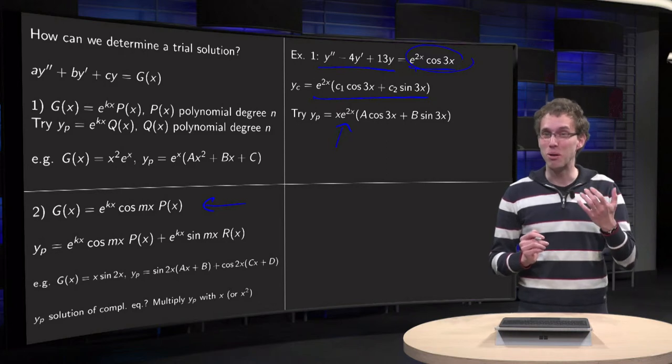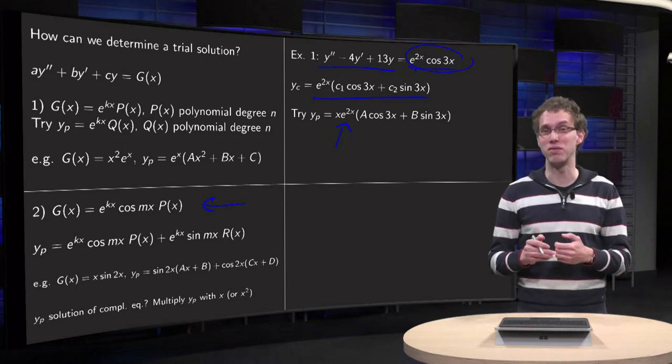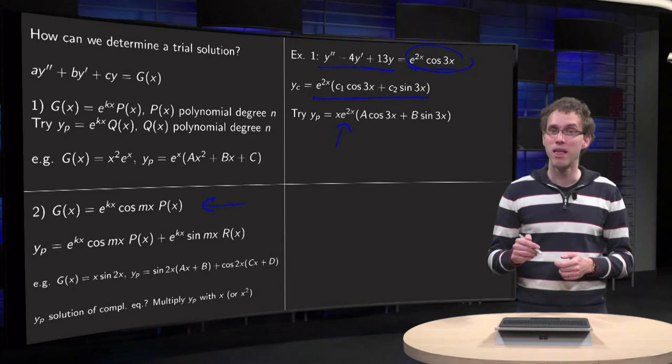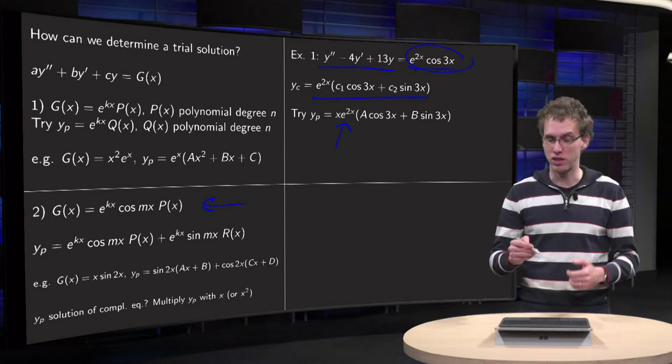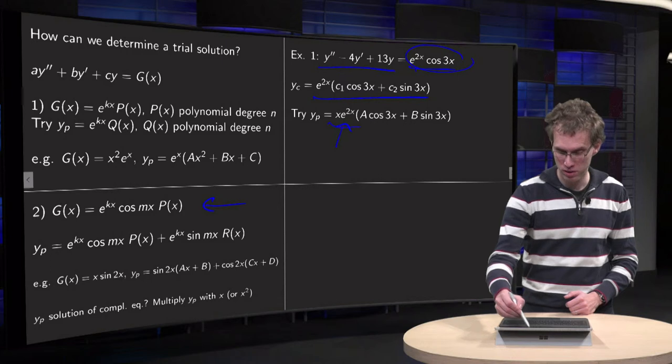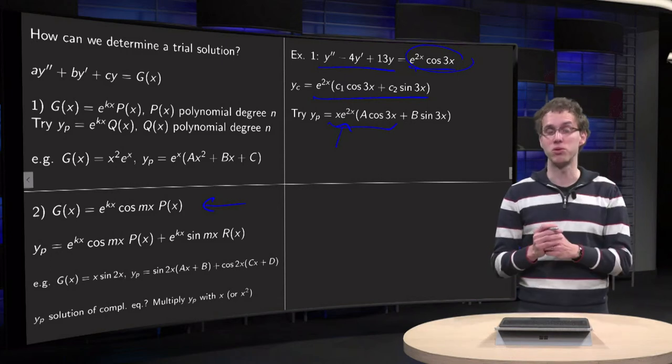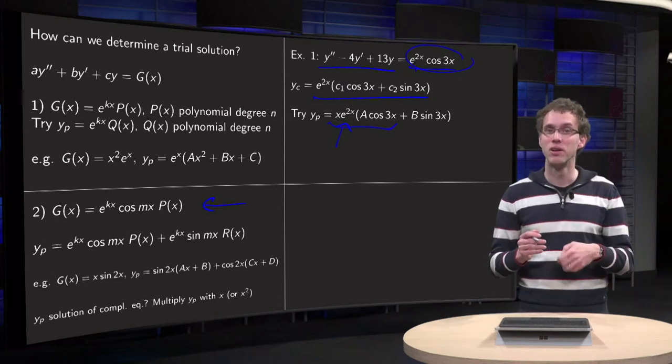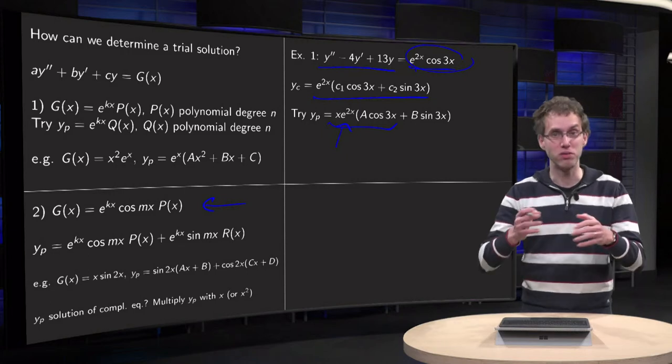Notice that this becomes computationally already quite intensive if you want to compute the A's and the B's, because you have to differentiate twice and you now have a product consisting of three terms containing an x. So you better do this correctly, otherwise you have to differentiate a lot.